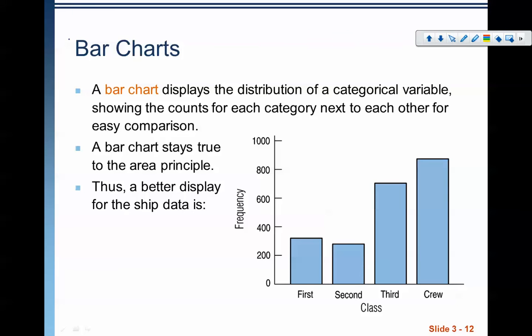Welcome back everybody. This is part two of chapter three in our AP Stats curriculum. What we are looking at in this chapter is categorical data — how do we display and describe categorical data? In the last video, we talked about the area principle and the beginnings of looking at frequency tables. In this video, we're going to look at bar charts, pie charts, contingency tables, and some of the things that have to do with those.